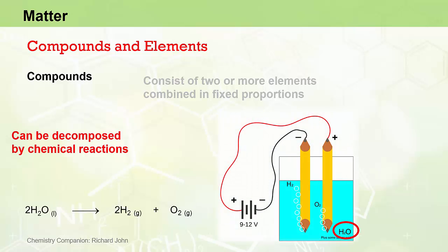For example, water is a compound in which hydrogen and oxygen are always combined in the same fixed proportions, a two to one ratio of hydrogen to oxygen atoms. Water can be broken down into its constituent elements by chemical reaction, in this case an electrochemical reaction, where an electric current results in the formation of oxygen gas at one electrode and hydrogen gas at the other electrode.